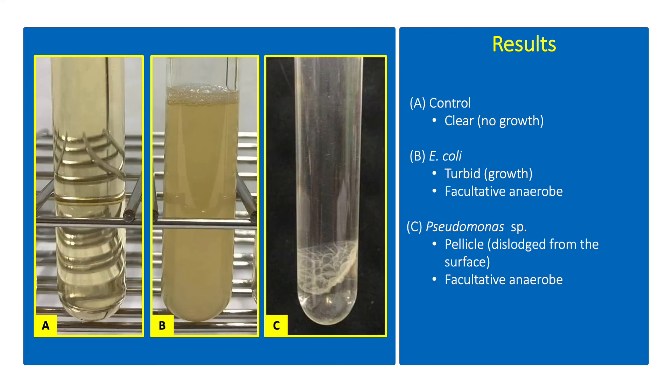Bacterial growth can be visually observed by the turbidity or cloudiness in the broth medium. A control tube containing the broth medium can be used to compare bacterial growth visually or through turbidometric method using a spectrophotometer. E. coli is a facultative anaerobe showing diffuse growth in the broth medium. Diffuse growth can also be an indication of bacterial motility. Some facultative anaerobes may also exhibit pellicle formation, a waxy membrane formed on the surface of the liquid medium. Pellicle formation is an indication of growth of non-motile bacteria.